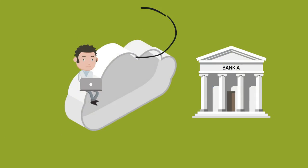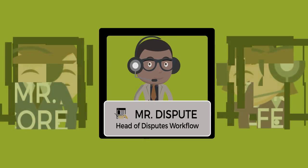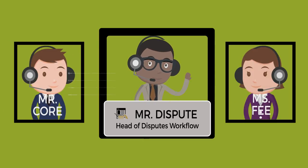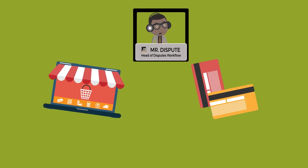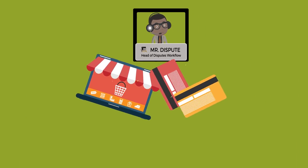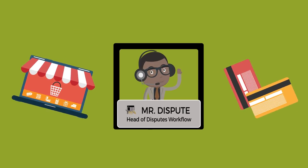Now, let's take a look at what happens if Joe gets charged for the merchandise but never receives it. Naturally, Joe will dispute the transaction with Bank A. In this case, Mr. Dispute will access the transaction data from Mr. Core and the fee data from Ms. Fee. He will then facilitate all disputes-related activities between the online merchant and the credit card issuer until the dispute claim is successfully resolved.